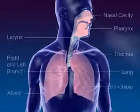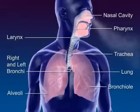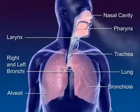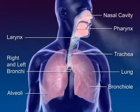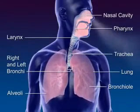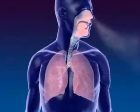The respiratory system moves air through the nose, pharynx, larynx, trachea, and bronchus to the alveoli, where the gas exchange between oxygen and carbon dioxide occurs.